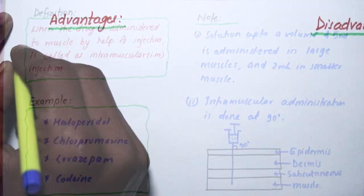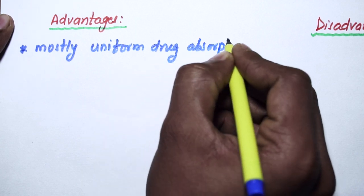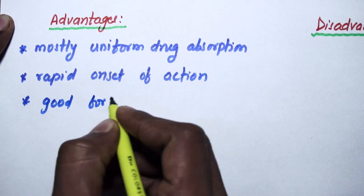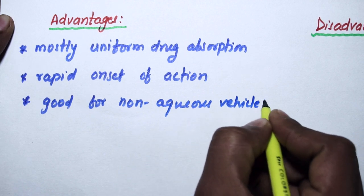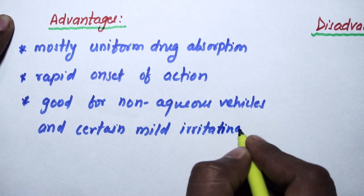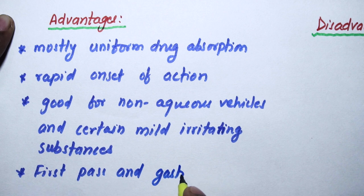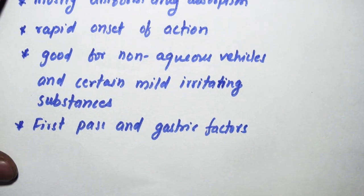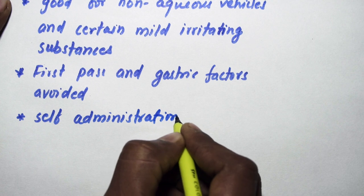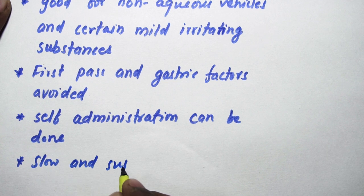Advantages of intramuscular route: mostly uniform drug absorption, rapid onset of action, good for non-aqueous vehicles and certain mild irritating substances or drugs, first-pass and gastric factors are avoided, self-administration can be done so no need of expert, and slow and sustained release of drug.